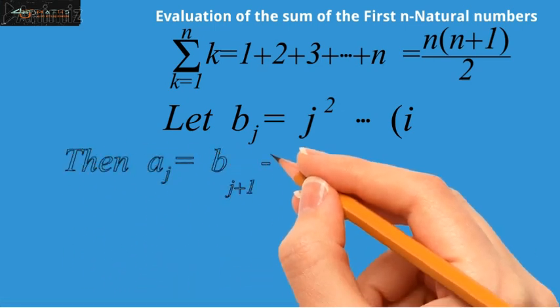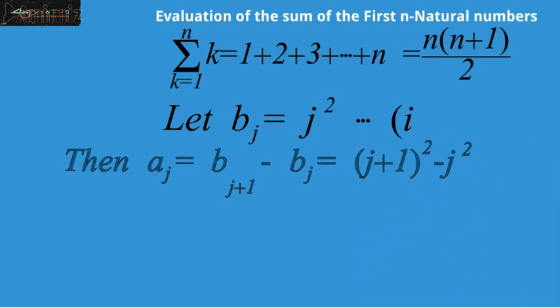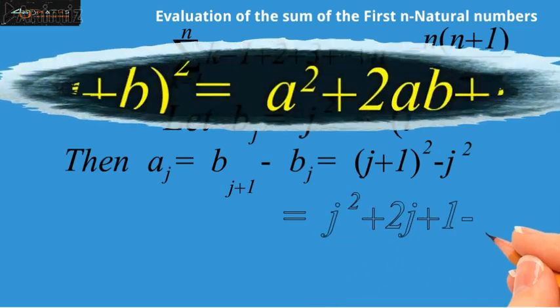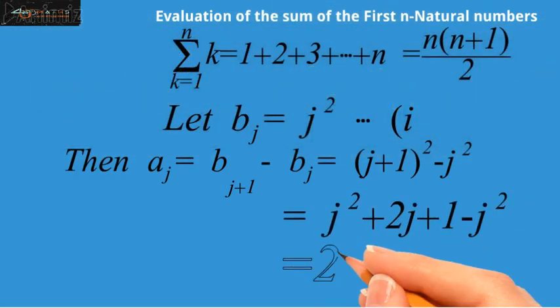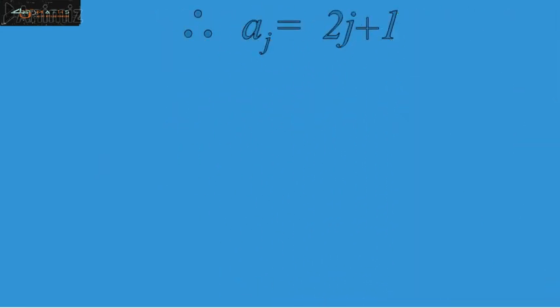which is equal to j plus 1 all squared minus j squared. Now, using the formula and simplifying, we have 2j plus 1. Therefore, aj equals 2j plus 1.